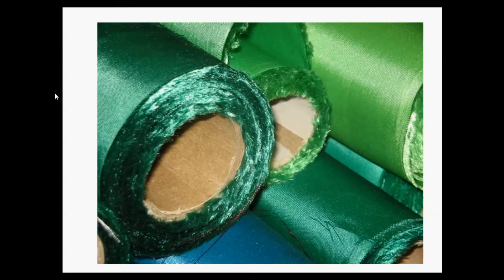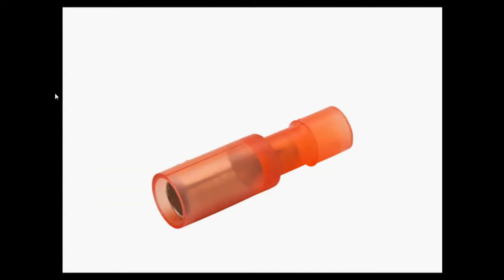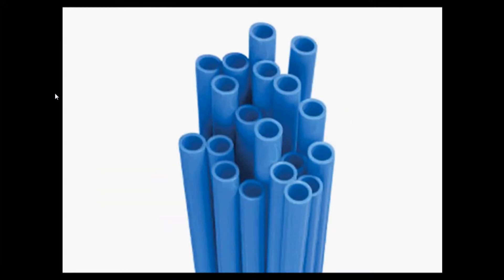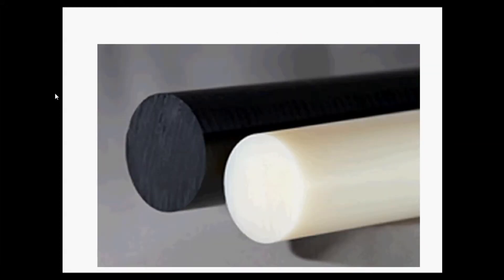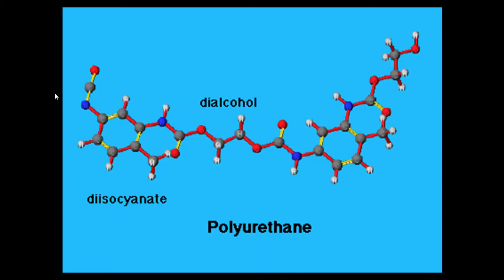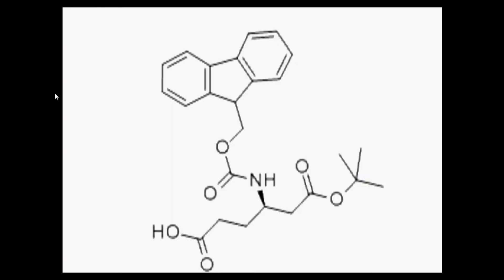About 85% of adipic acid demand accounts for nylon-6,6 production, which is used for electrical insulators, pipes, profiles, and other various mechanical elements. The rest of demand accounts for polyurethane and adipic ester production.